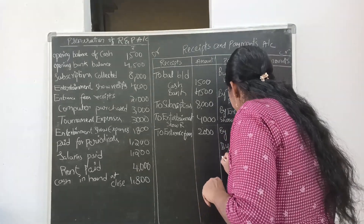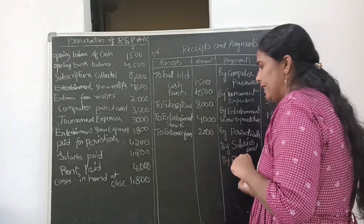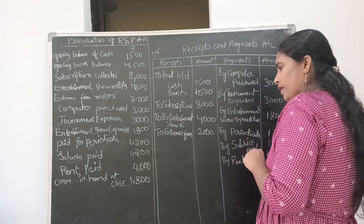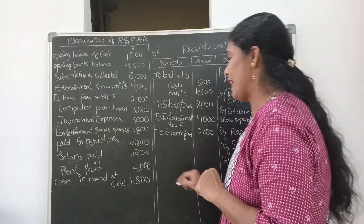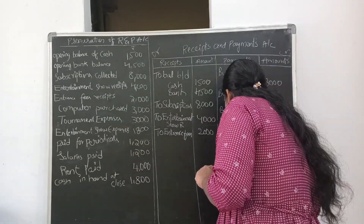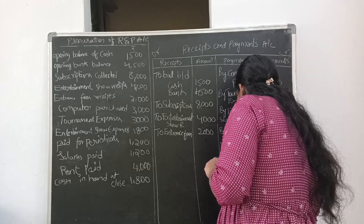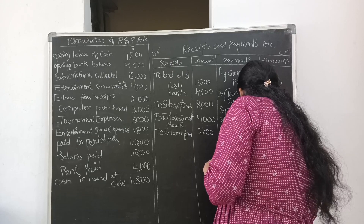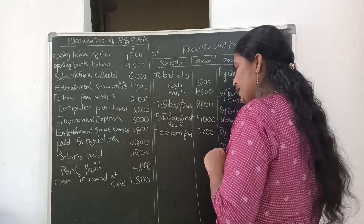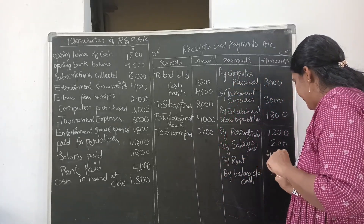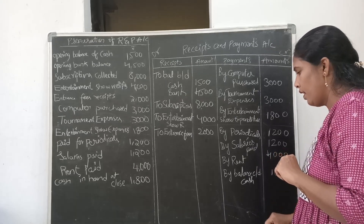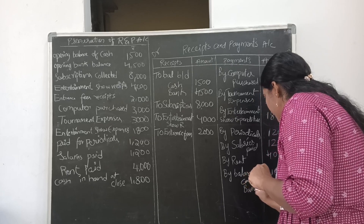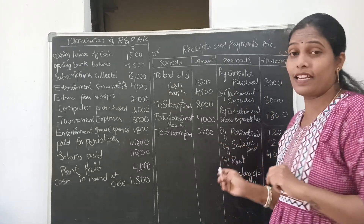Next, rent paid — we write rent on the payment side; the amount is 4000. Now for the closing balance, we write 'Balance Carried Down.' Cash in hand is given as 1800. We now need to find the bank balance, which will be the balancing figure. First, calculate both sides.